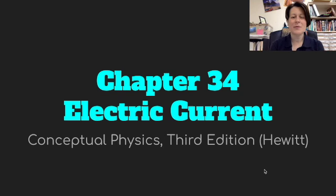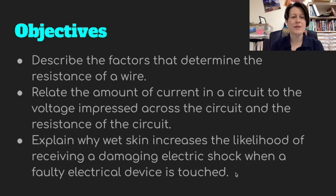Hello, everybody. It's Mrs. Pound, and we are studying Chapter 34 on electric current. Our objectives for today's video are to describe the factors that determine the resistance of a wire, relate the amount of current in a circuit to the voltage impressed across the circuit and the resistance of the wire, and explain why wet skin increases the likelihood of receiving a damaging electric shock when a faulty electric device is touched.